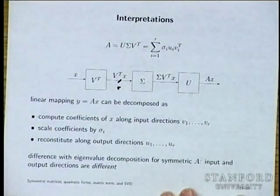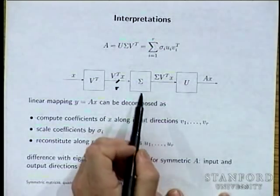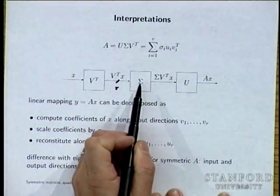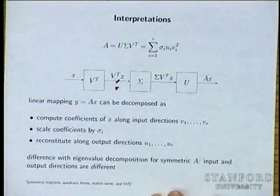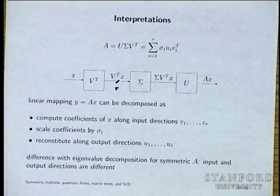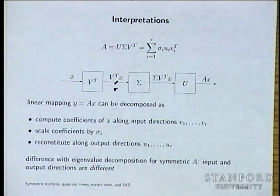When A is square, the SVD looks exactly like an eigenvalue decomposition for symmetric A, with one difference: in a symmetric eigendecomposition, the diagonal Λ is real but can have negative entries, and U and V are the same. Symmetric means the input and output directions are the same, which makes sense — transposing a matrix switches the roles of input and output.